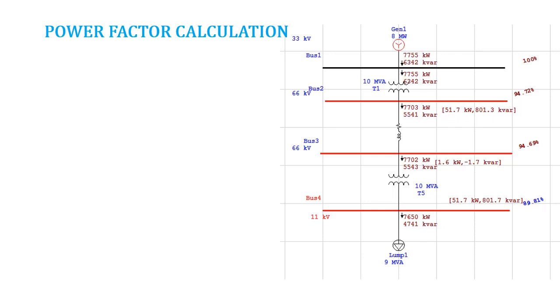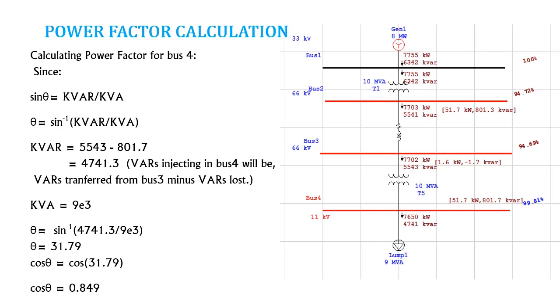So here at ETAP we will find the power factor in an indirect way. First you will find the theta and then you will find the power factor. So as previously discussed, sin theta equals kVAR over kVA. So the kVARs reaching on this bus, bus number 4...